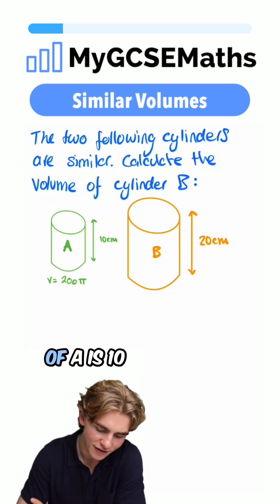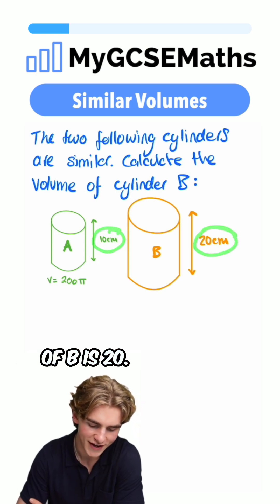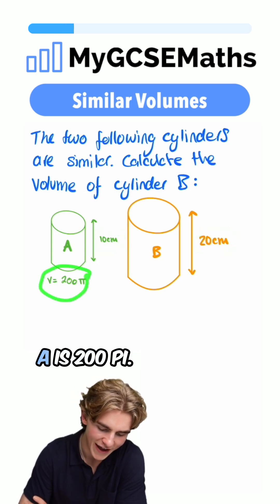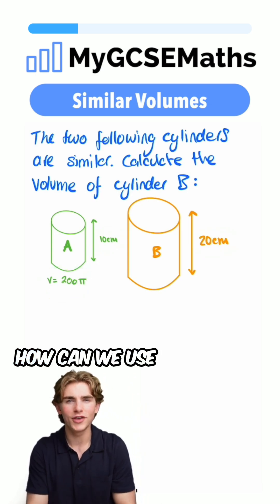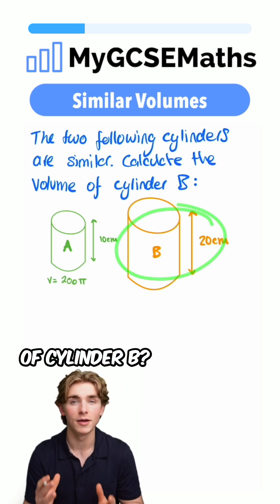Well, we're told that the height of A is 10 and the height of B is 20, and we're also told that the volume of A is 200π. How can we use this information to find the volume of cylinder B?